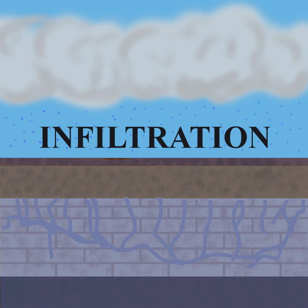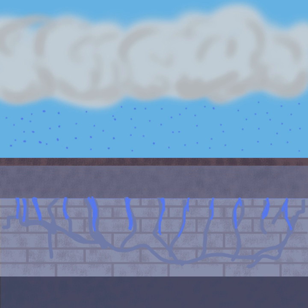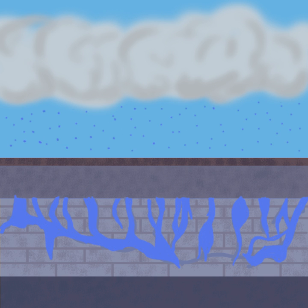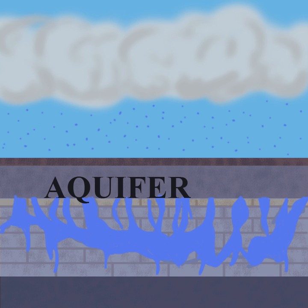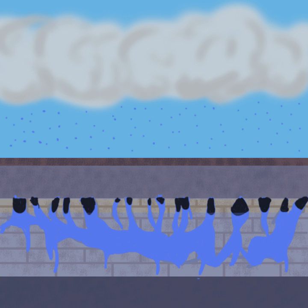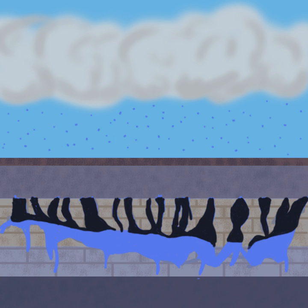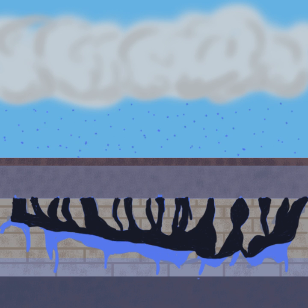When the acidic groundwater interacts with the limestone at the water table, it starts to dissolve the limestone, widening the cracks by forming channels. The water-filled channels develop into an aquifer. As the aquifer drains due to a lowering of the water table, a cave is formed.